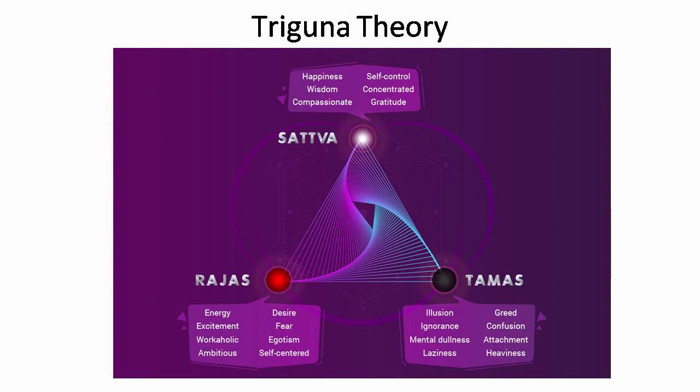I propose a theory of strange attractors where Vata controls movement and signaling, Pitta controls transformation, and Kapha controls assimilation. Another theory which was completely incomprehensible to me was the Triguna theory — Sattva, Raja and Tama.